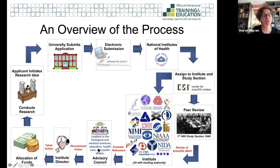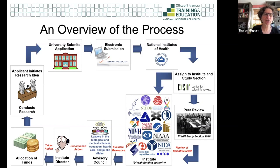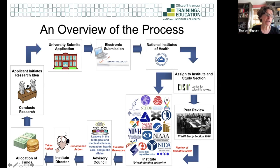Advisory Council makes recommendations to the Institute Director, and then the Institute makes funding decisions. Money goes out to your university for you to do research. This is a long process — it requires you to interface with the right people at your institution, engage with the peer review process, and respond to inquiries before your grant goes to Advisory Council. It can be up to a year between the time your grant is submitted and when you actually receive money.